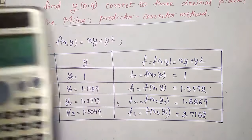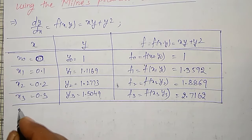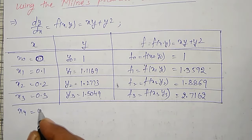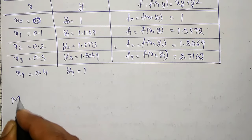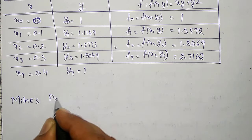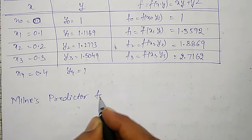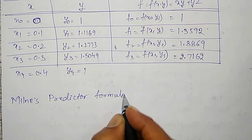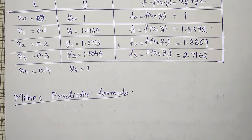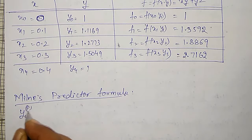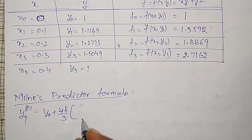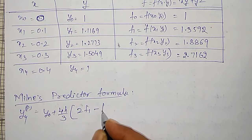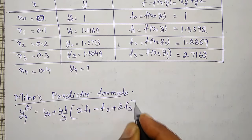This is my f values. And x4 value I have to calculate for this: x4 is 0.4, corresponding y4 I have to calculate. For that, Milne's predictor formula: y4 predictor is equal to y0 plus 4h by 3 into 2 times f1 minus f2 plus 2f3. This formula you have to remember.